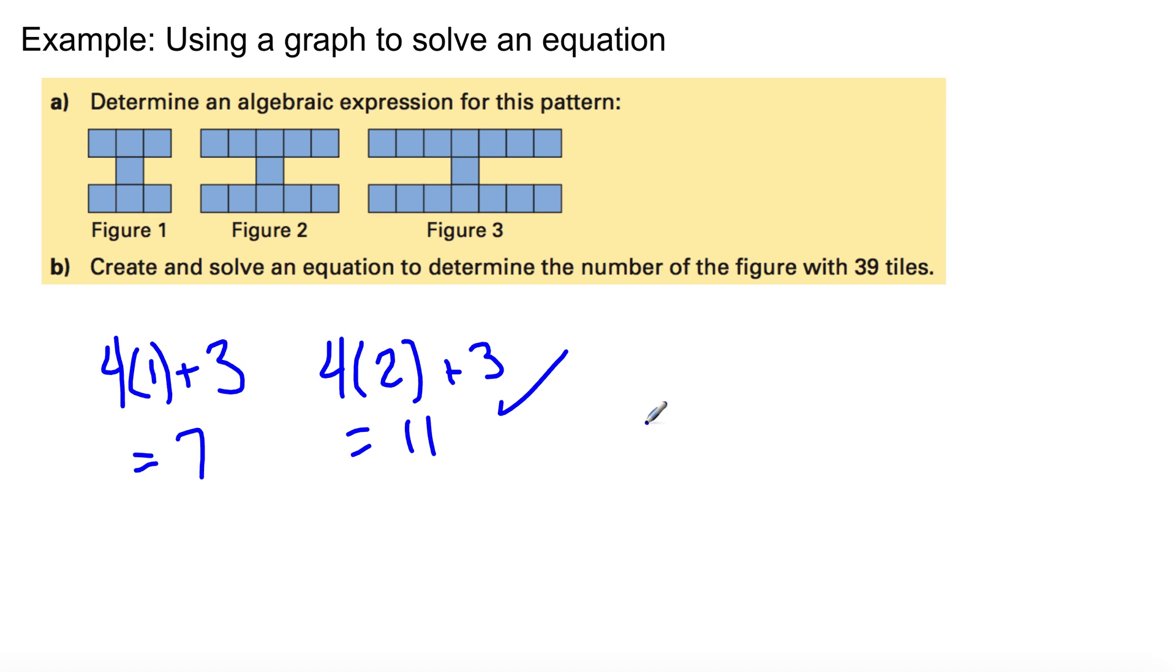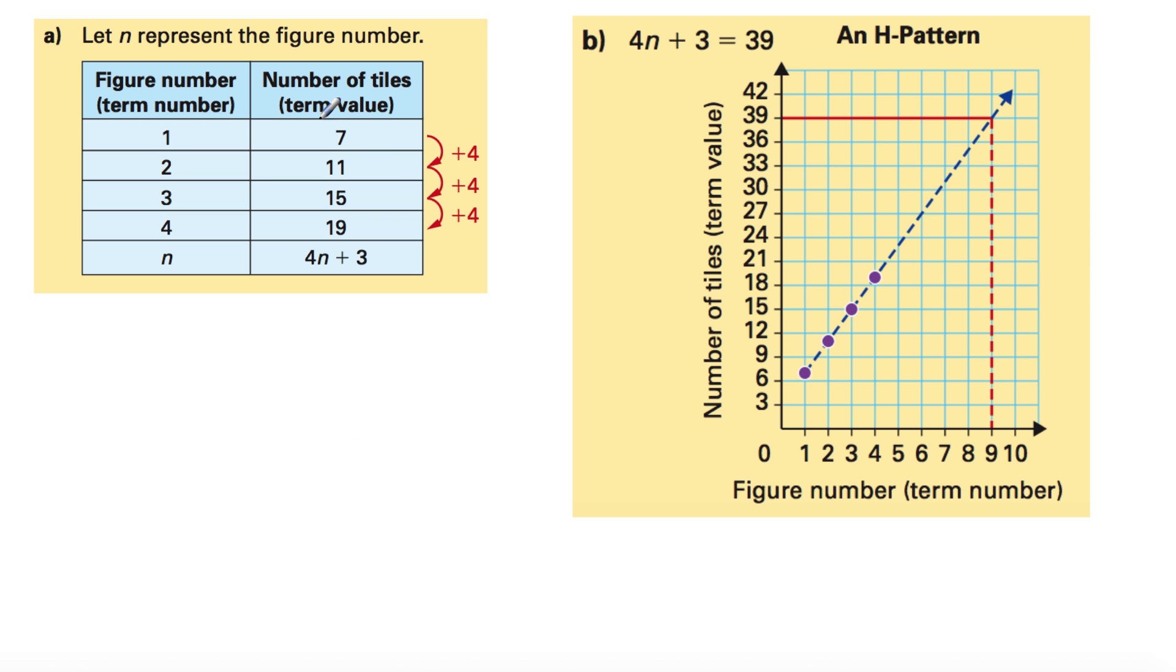So, the equation we have here will be 4n plus 3. Now, create and solve an equation to determine the number of the figure with 39 tiles. So, we have eleven here, seven, eleven, and so on and so forth. The first thing we have to do is make a table of values and continue the table. Now, here we have everything increasing by four.